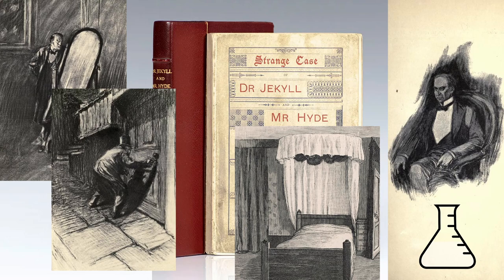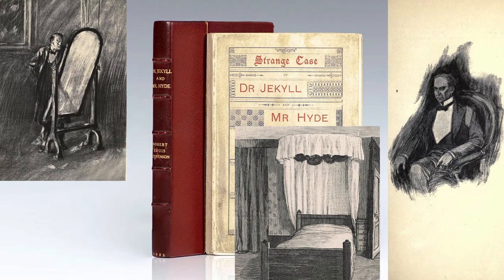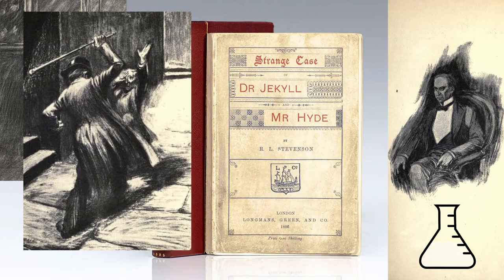One night, Dr. Jekyll transformed into Mr. Hyde during his sleep without the need of the potion. Scared at the notion of possibly permanently becoming Mr. Hyde, he swore to never drink the potion again. Slipping off the wagon two months later, however, Jekyll gave in to the urge to drink the potion, and in his Mr. Hyde form he murdered a man in the street called Sir Danvers Carew, a Member of Parliament.